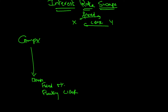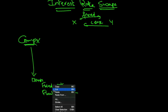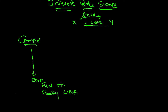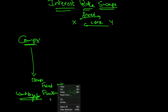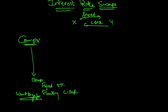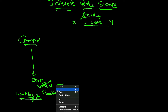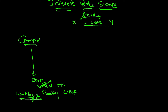Now imagine Company X is a good creditworthy company. They believe that the interest rate will come down in future — they predict interest rates will fall — so they want to go for floating rate. However, they play a trick: they want floating rate, but they will actually select fixed rate.